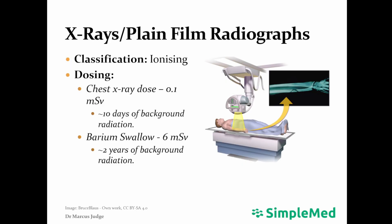Next, we will discuss x-rays or plain film radiographs. These are an ionizing form of scan. They can be carried out at the patient's bedside using a portable x-ray machine, or in specialized x-ray rooms. The dose of radiation from an x-ray is generally quite low — for example, a chest x-ray will deliver around 0.1 millisieverts of radiation, or around 10 days of background radiation. This makes these scans very commonly ordered; however, they have limited use in diagnosis and are often used as screening tests before carrying out other tests.